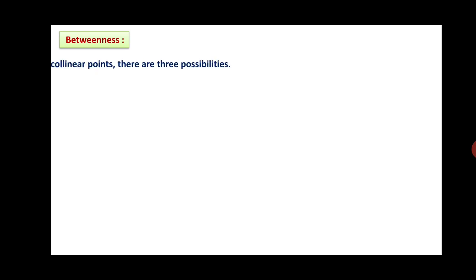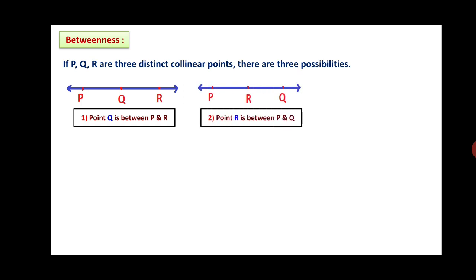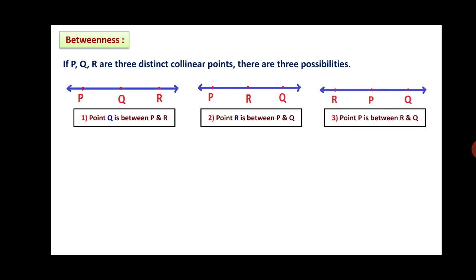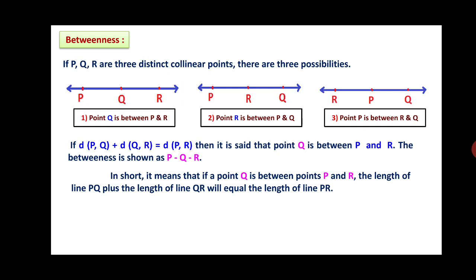So, we will now see betweenness. If P, Q, R are 3 distinct collinear points, there are 3 possibilities: Q is between P and R; R is between P and Q; or P is between R and Q. If distance PQ plus distance QR equals distance PR, then it is said that point Q is between P and R. In short, if a point Q is between points P and R, the length of PQ plus the length of QR will be equal to the length of PR.